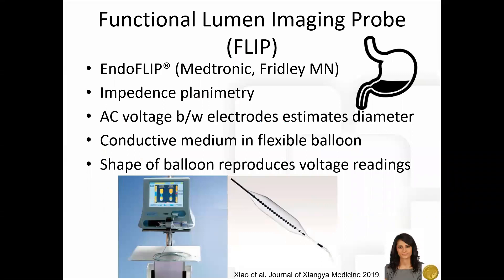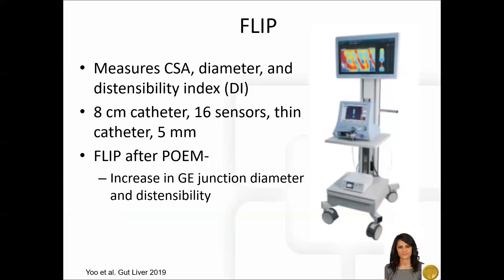Functional lumen imaging probe technology uses impedance planimetry to characterize the geometry of cross-sectional areas. A flexible balloon containing a conductive medium is used. It uses AC voltage measurements made between pairs of electrodes to create a topographic image that reflects the shape of the balloon and measures the cross-sectional area, diameter, and distensibility index. The catheter contains 16 electrodes spaced five millimeters apart in an eight centimeter balloon.